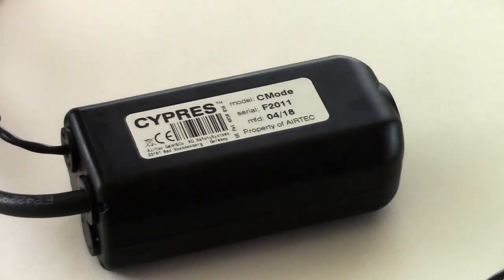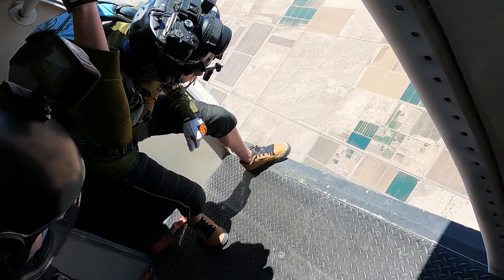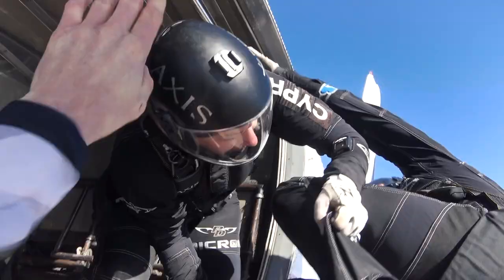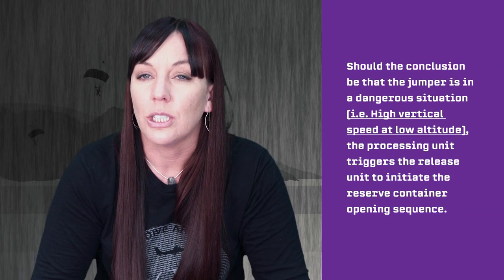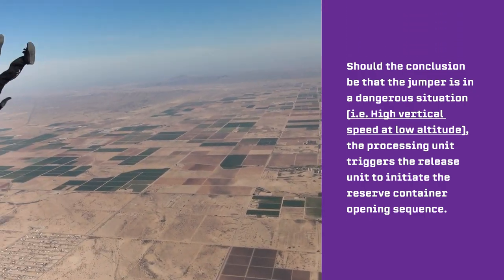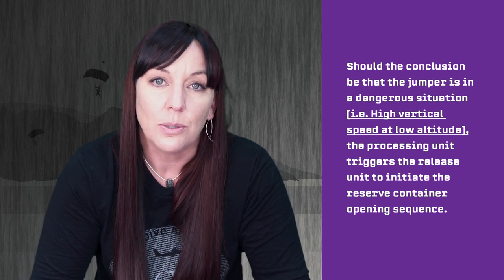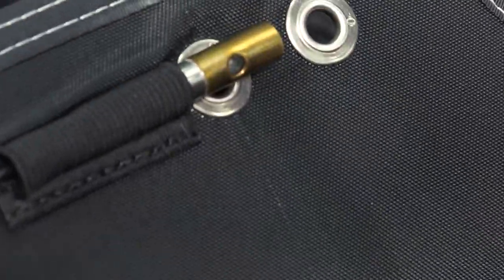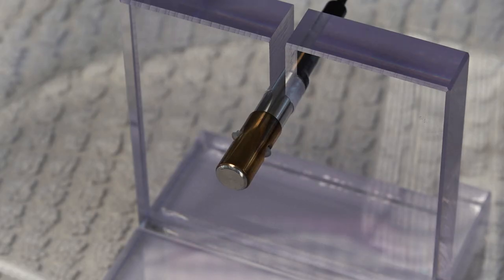The processing unit contains a factory-programmed microprocessor that is capable of real-time calculations of the jumper's altitude and rate of descent based on barometric pressure. By monitoring this data, certain criteria are generated from which conclusions are drawn. Should the conclusion be that the jumper is in a dangerous situation — i.e., high vertical speed at low altitude — the processing unit triggers the release unit to initiate the reserve container opening sequence. The cutter for the reserve loop is completely independent of the rig's primary system. The AAD does not pull the ripcord pin out of the closing loop, but rather cuts the loop inside the reserve container to initiate the opening sequence.